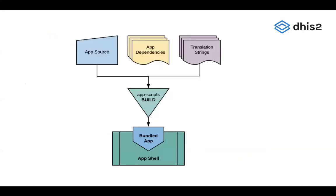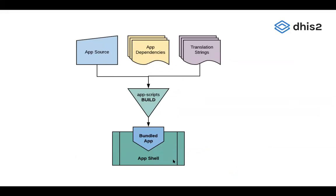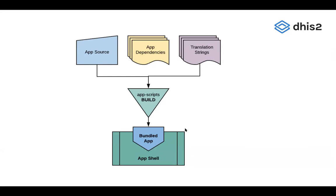So what does the App Platform do? Basically, it takes your source code, your application dependencies, and a few other things — in this case I'm using translation strings as an example — and you run a script on your local machine that builds that application into a set of HTML, JavaScript, and CSS files. That can then be run independently and also be installed into DHIS2 as an application.